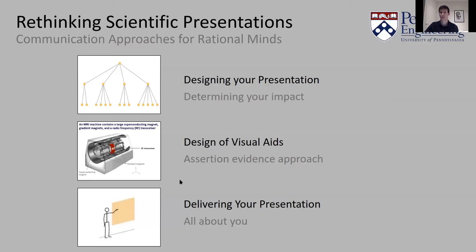That section was about assertion-evidence design, and obviously we have three core laws to always come back to. The first is adapting to your audience — assertion-evidence was literally created and tested to maximize audience retention. When it comes to signal-to-noise ratio, assertion-evidence really forces you as a creator to focus on messages and reinforce those messages with visual evidence, because that's what PowerPoint is good for. And to get rid of superfluous things like the painting. Redundancy is really core to assertion-evidence because it's the idea that the audience is receiving your message through what she hears, what she reads, and what she sees visually — redundantly providing the same message.